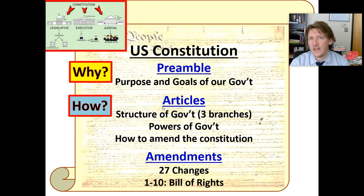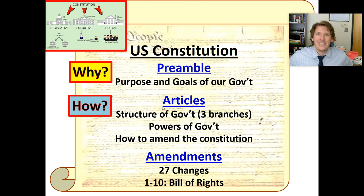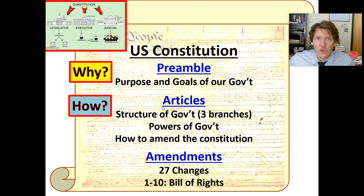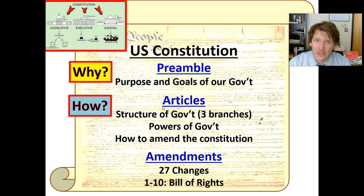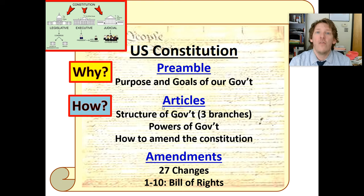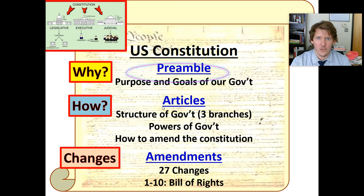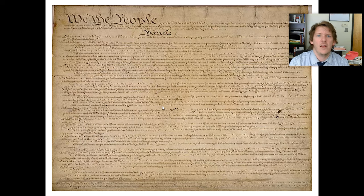The how then explains how the government does it — it's the instructions, the directions, the blueprints. Why do we have a government? We need a military. How does that work? You look in the articles and it explains exactly how we establish a military, the rules of the military, who's instructing the military, how the military can and cannot go to war. The how is written in the articles. In the amendments, it's simple — it's all the changes. So let's focus mainly on the preamble today.